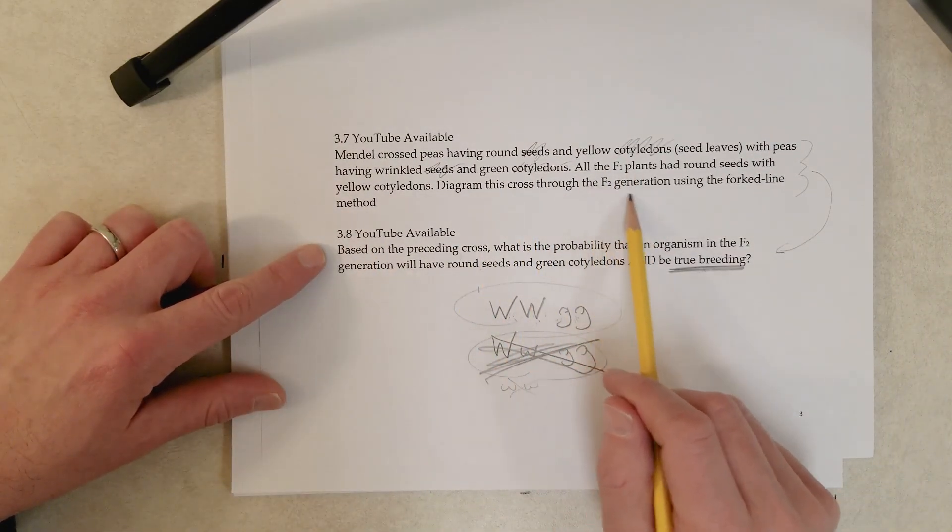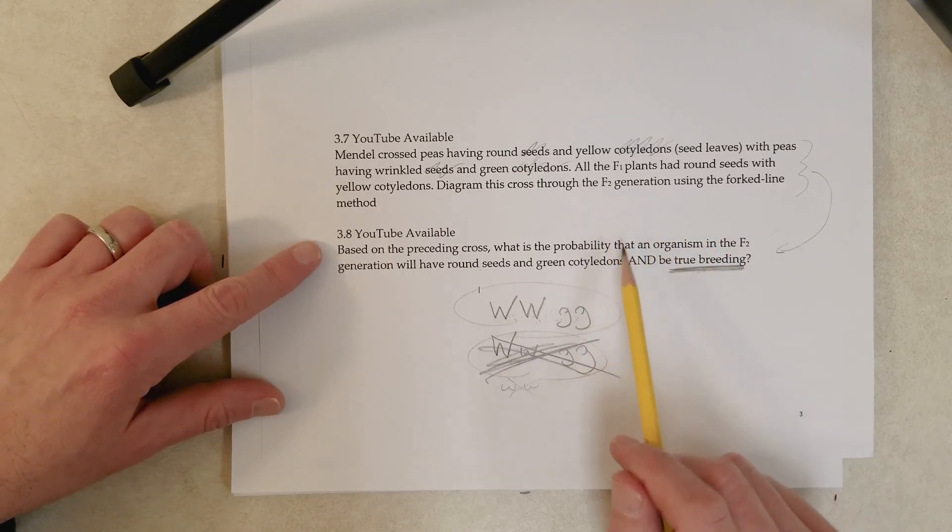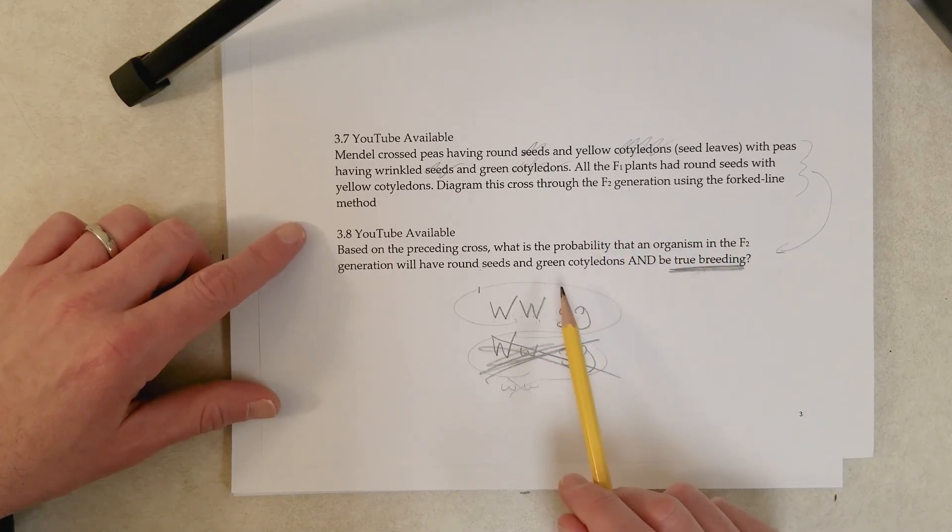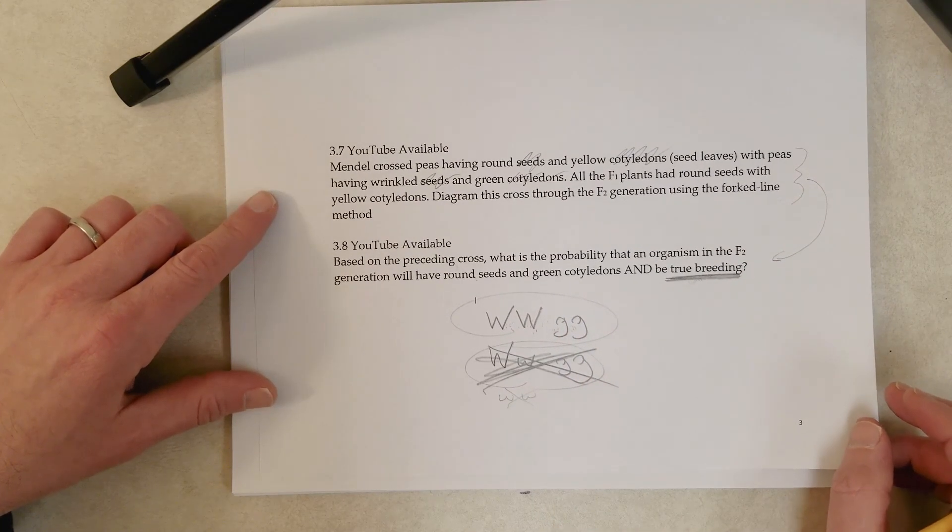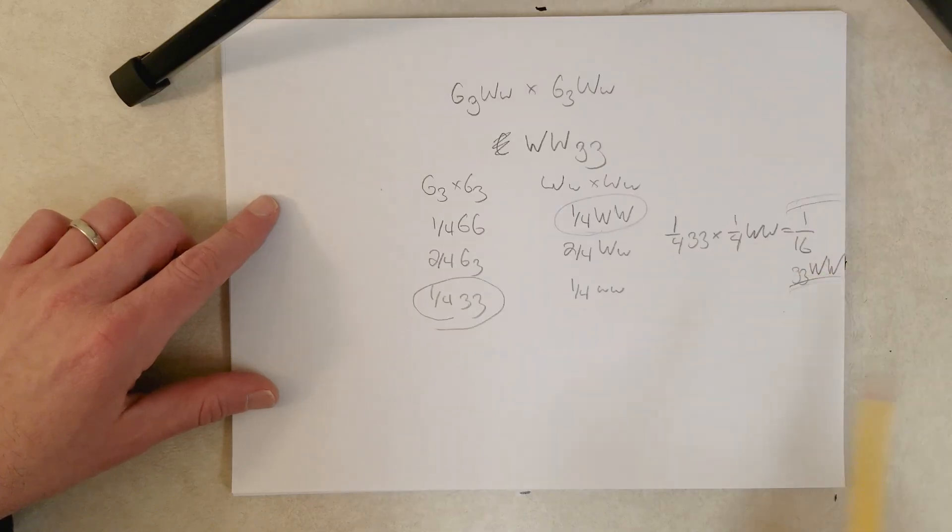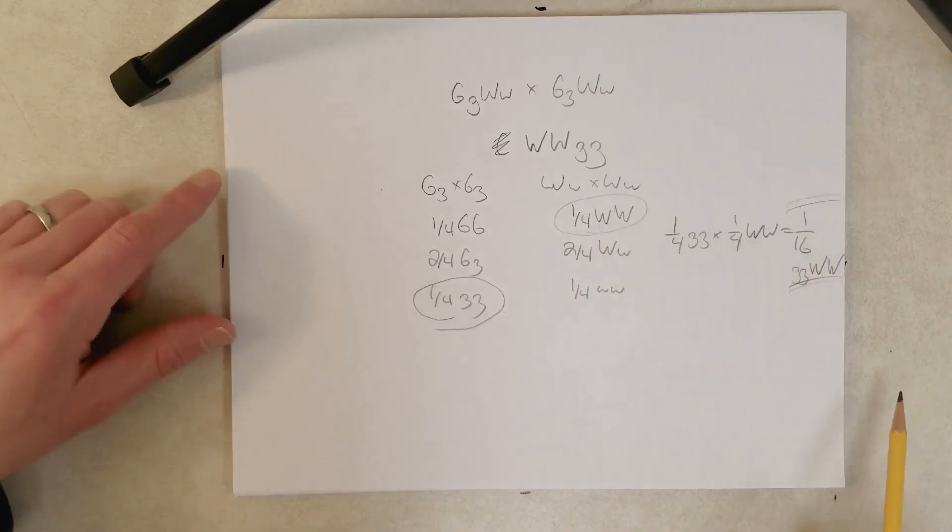So, that's a shortcut you can use to answer these types of questions right here. You don't have to do the whole F2 cross and figure out every genotype that's possible in the ratio, the fraction of that genotype in the group of offspring. You can just zone in on the genotype you want, multiply these together, and then get the fraction you're interested in.